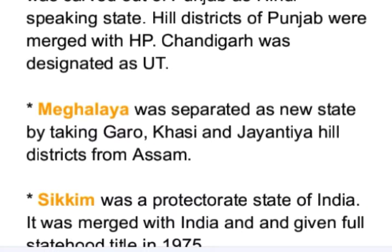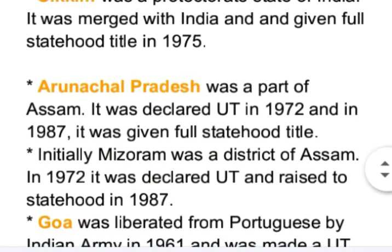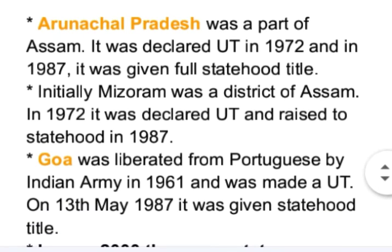Meghalaya was separated as a new state by taking the Garo, Khasi, and Jaintia Hill districts from Assam. Sikkim was a protectorate state of India and was merged with India, given full statehood in 1975. Arunachal Pradesh was a part of Assam; it was declared a Union Territory in 1972 and given full statehood in 1987. Initially Mizoram was a district of Assam; in 1972 it was declared a Union Territory and raised to statehood in 1987.